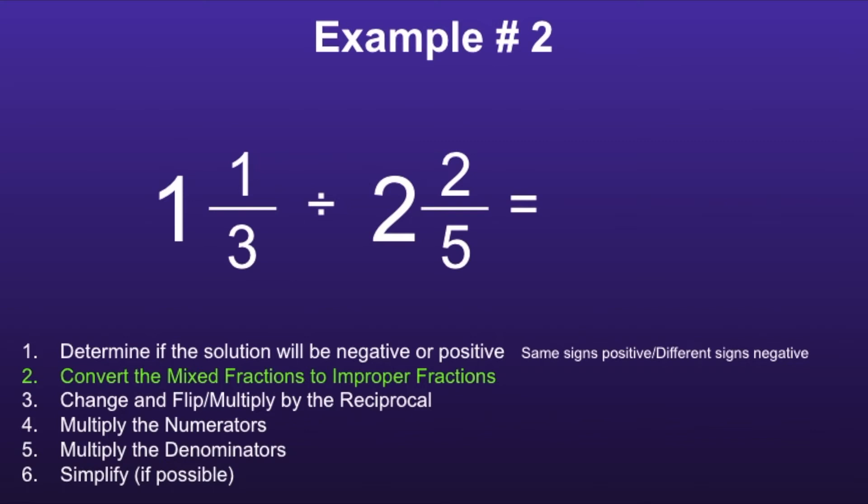Let's start with that first mixed fraction, one and one-third. We can convert this to an improper fraction by multiplying the whole number by the denominator, and one times three is equal to three, and then adding the numerator to that number. So three plus one is equal to four. So one and one-third can be converted to the improper fraction four-thirds.